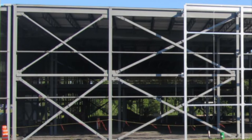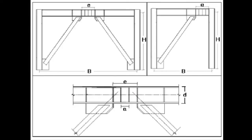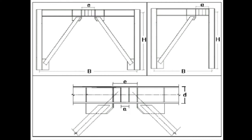The brace frame can be classified as a concentric brace frame or an eccentric brace frame. In the building industry, the concentric brace frame is most common — it is where the members intersect at a particular node, meaning the centroid of each member passes through the same point. In the eccentric brace frame, the centerlines of the members do not meet at the same point, as illustrated here where the end nodes have some eccentricity.